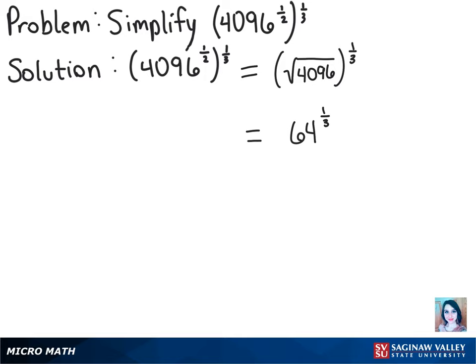64 to the 1/3 power means the cubed root of 64, so we can rewrite this as the cubed root of 64. The cubed root of 64 is 4, and that is our final solution.